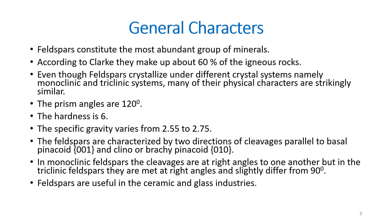The prismatic angles are about 120 degrees and hardness is about 6. The specific gravity of this group of minerals may vary from 2.55 to 2.75. These feldspars are characterized by two directions of cleavage parallel to the basal pinacoid (001) and the clinobrachypinacoid (010). In monoclinic feldspar the cleavages are at right angles, while in triclinic feldspar they differ slightly from 90 degrees. These feldspars are generally useful in ceramic and glass industries.